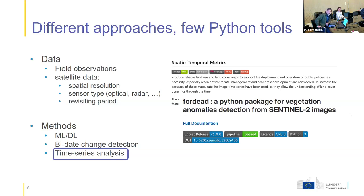Unfortunately, there are few tools that use satellite image time series. We have two examples of Python packages. The last one, ForDid, is maybe the most advanced for monitoring anomalies in forest, but it is a package specialized on the tracking of dieback in forest with only one method.